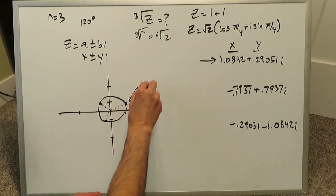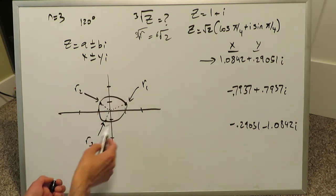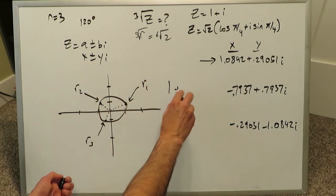This is my root number 1. We'll just call that r1. Here's my root number 2. We'll call that r2. And here's my root number 3, and we'll call that r3. These are the three roots of this complex number 1 plus i, which you know is in this form a plus or minus bi.